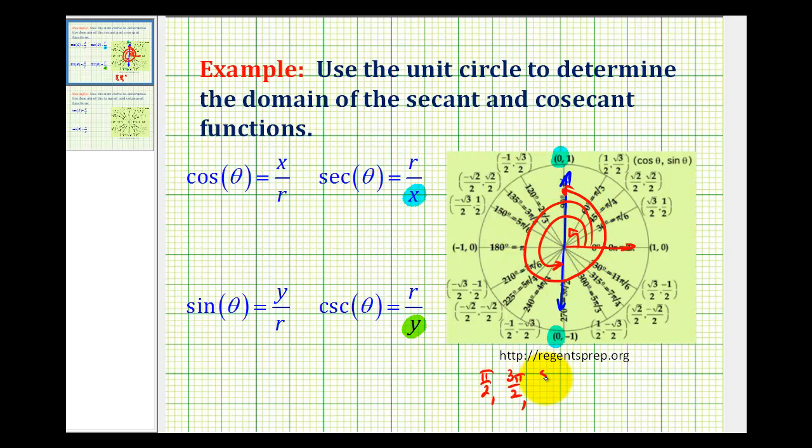that'd be five pi over two. And notice how each time we're just adding another pi. The next one would be seven pi over two and so on. So if we start with pi over two radians, we can just add or subtract multiples of pi radians and those are the values that must be excluded from the domain.